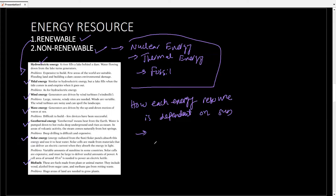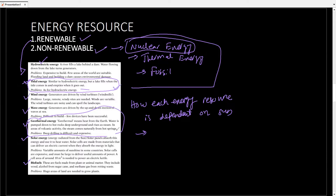There are only a few energy resources which are independent of the sun. Geothermal energy does not draw its energy from the sun. Tidal energy does not draw its energy from the sun. Nuclear energy does not draw its energy from the sun. These are the three types of energy independent of the sun. Tidal energy depends on the gravitational pull of the moon, geothermal energy comes from the center of the earth, and nuclear energy comes from the nucleus of an atom.